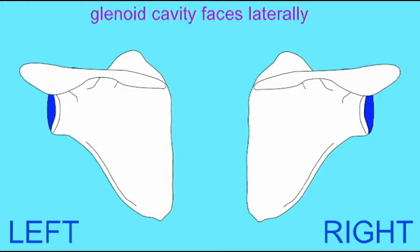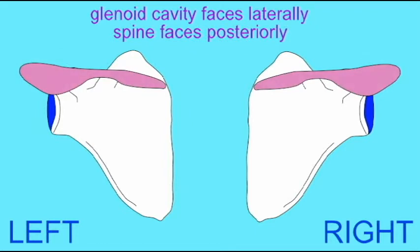Secondly, the spine and the acromion of the scapula face posteriorly. This is an easy one because one can readily palpate this with your fingers. You can feel the spine of your scapula along the posterior surface, so you can demonstrate for yourself that this is true.